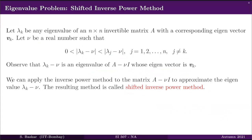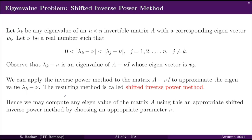Given that we have successfully chosen nu such that lambda_k - nu is the unique smallest eigenvalue of A - nu·I, we can use the inverse power method. In that case, the method is called the shifted inverse power method. With this idea, we can compute any eigenvalue of the matrix A using an appropriate choice of nu in the shifted inverse power method.